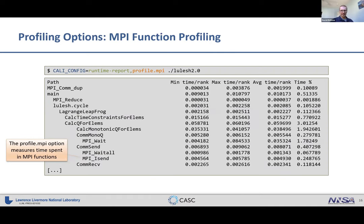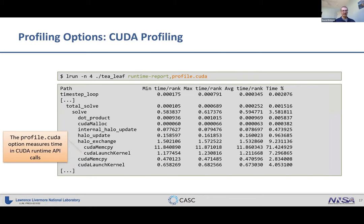Some useful options: the profile.mpi option instruments MPI functions in your code and shows the time spent in them — typically quite helpful. Similarly, the profile.cuda option enables analysis of time spent in CUDA runtime API calls like cudaMemcopy, cudaLaunch, cudaDeviceSynchronize, and similar functions.